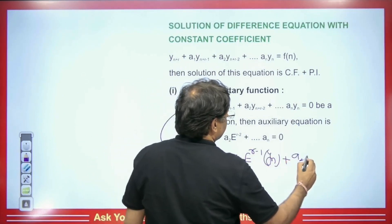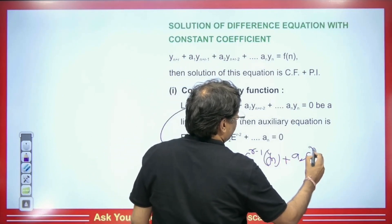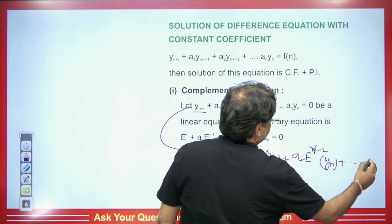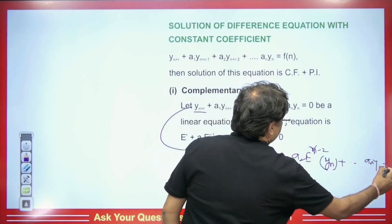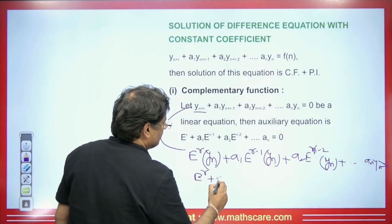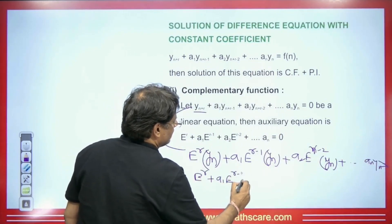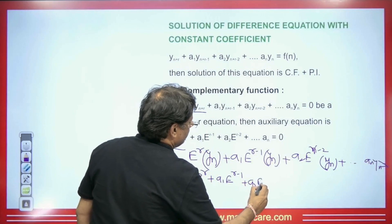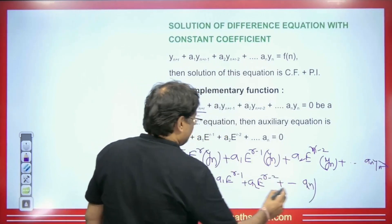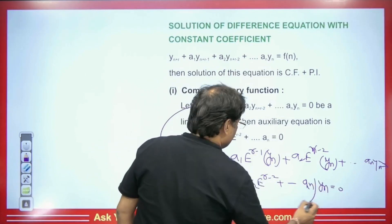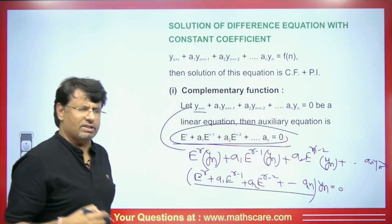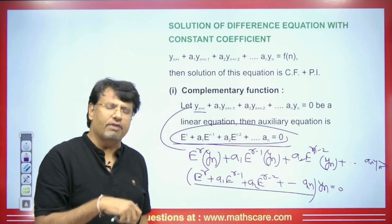In the same way, we get A2·E^(r-2)·yn. Taking yn common from the back, it will be E^r + A1·E^(r-1) + A2·E^(r-2) + ... + An, and at last, yn = 0. Now put this equal to 0. This will give the roots just like we find the auxiliary equation in differential equations.